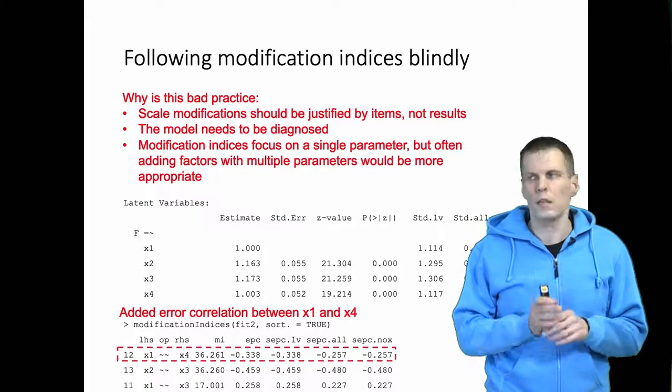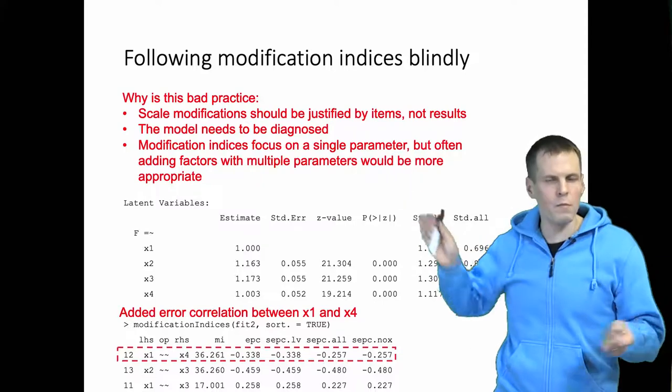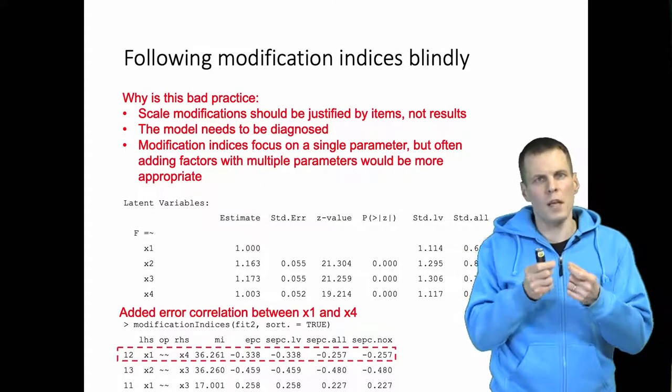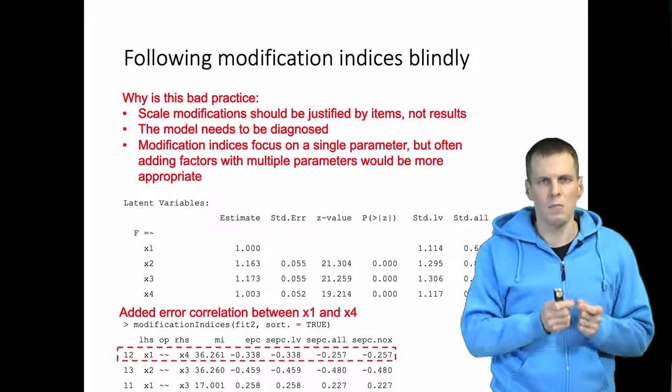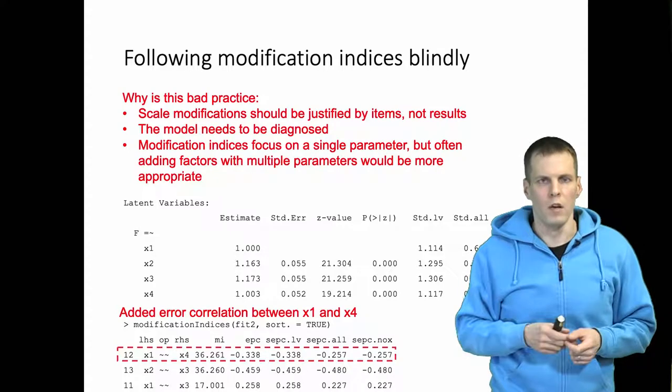It's bad practice because scale modification should be justified again by the items, not by the results. And we would need to understand why is there a correlation by looking at items, and then that is the justification, not the fact that we have a modification index.